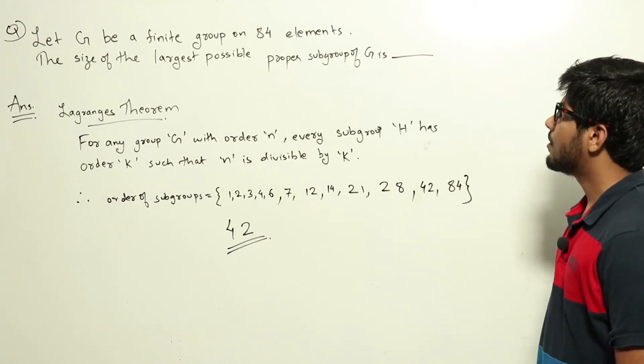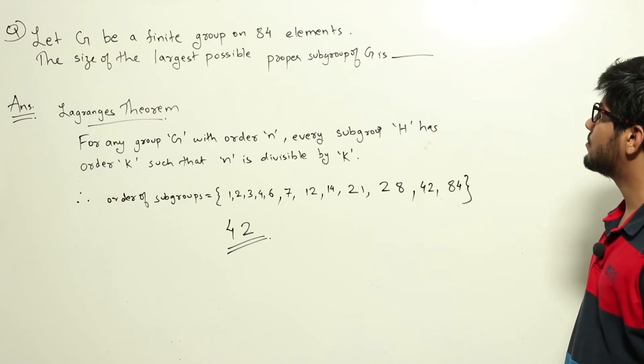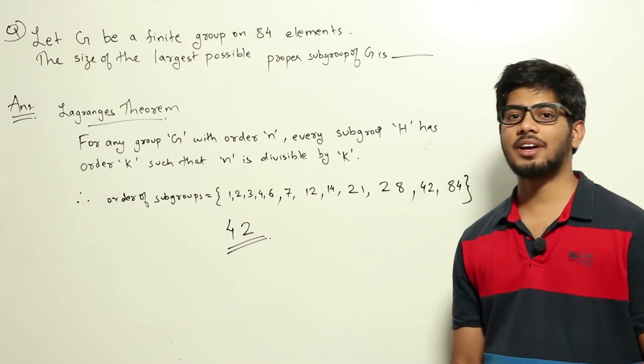Let G be a finite group of 84 elements. The size of the largest possible proper subgroup of G is? This is a question from Set Theory from Engineering Mathematics.